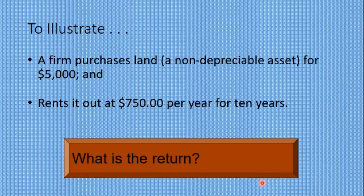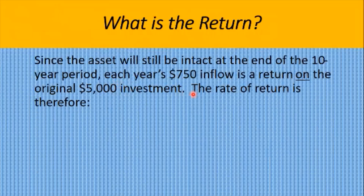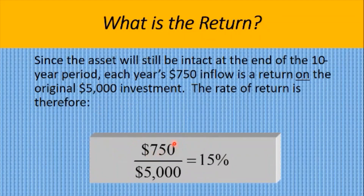To illustrate: a firm purchases land, a non-depreciable asset, for $5,000 and rents it out at $750 per year for 10 years. There must be a return. Since the asset will still be intact at the end of the 10-year period, each year the $750 inflow of rent is a return on the original $5,000 investment. The rate of return is therefore 750 divided by 5,000, which equals 15%. That is our simple rate of return calculated.